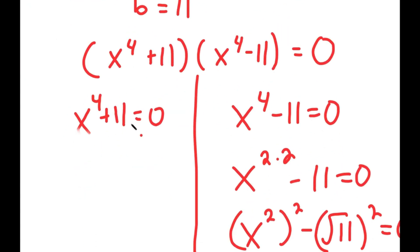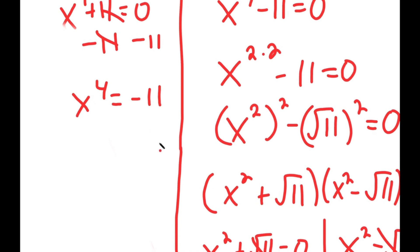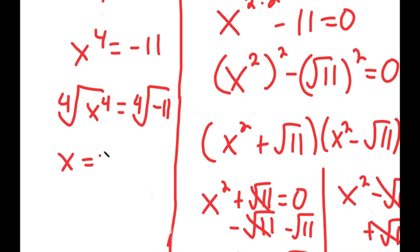Now going back, I have x to the power of 4 plus 11 equals 0. So I can subtract 11 on both sides, giving x to the power of 4 equals negative 11. Now I can take the fourth root on both sides, so I get x is equal to the fourth root of negative 11. And this is positive or negative.